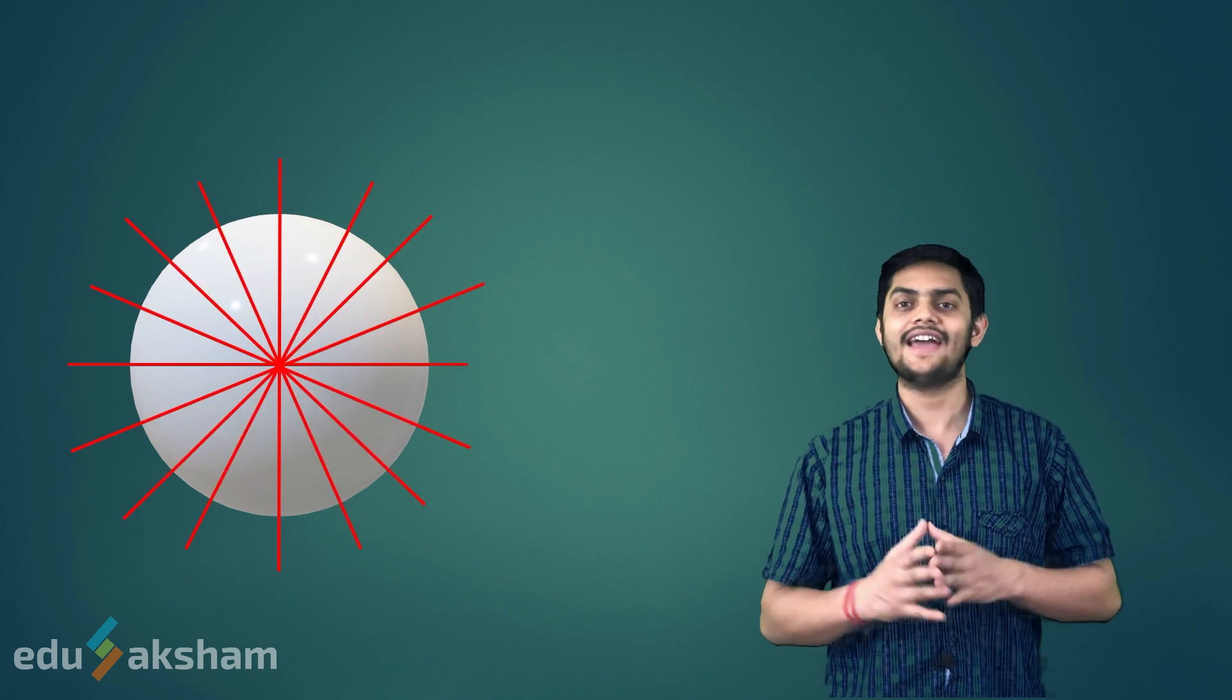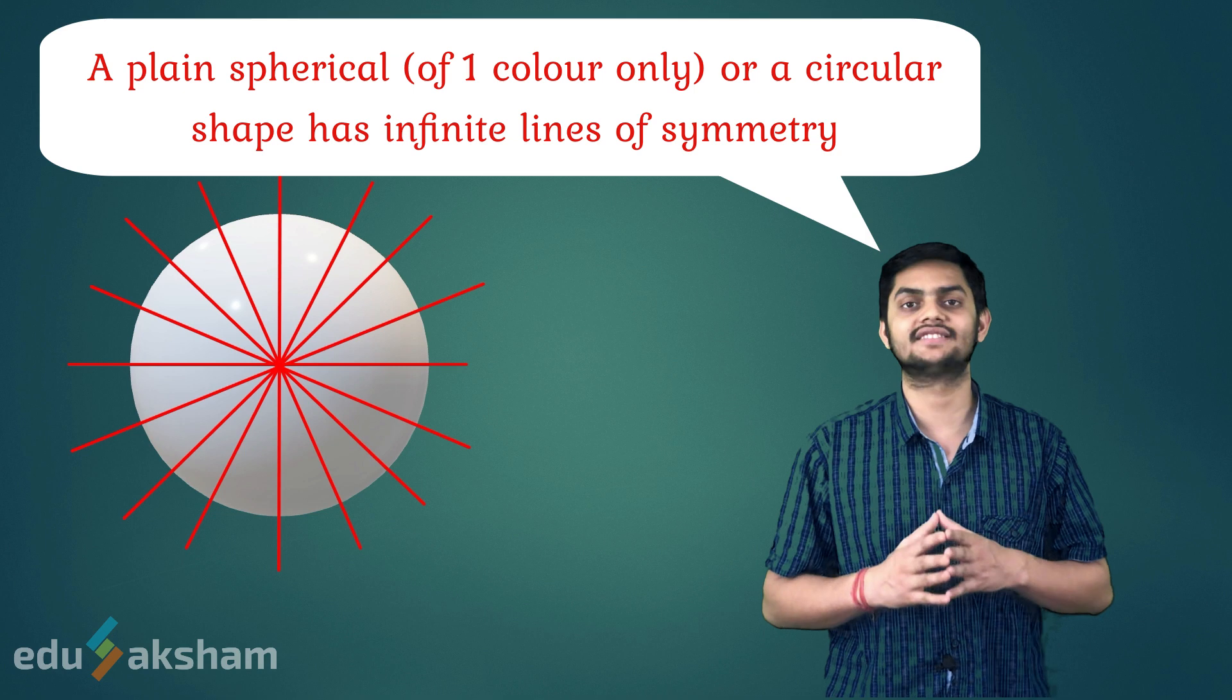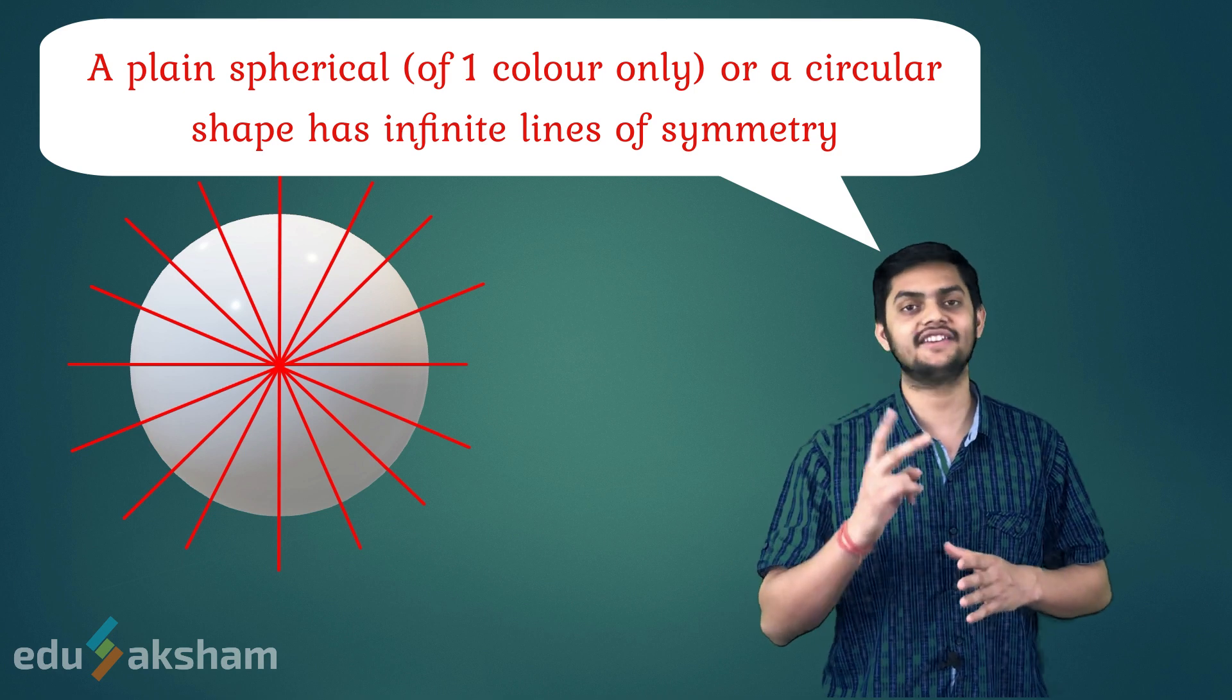What if we have a plain ball of one color? Then, how many lines of symmetry will it have? The answer is, a plain ball has multiple lines of symmetry. Each line divides the plain ball into two identical halves.